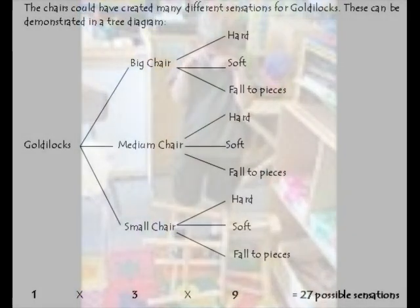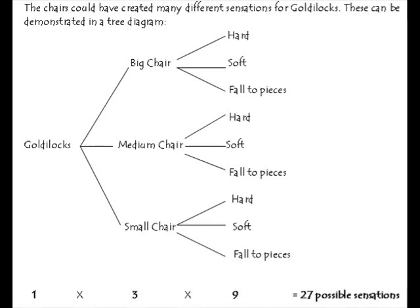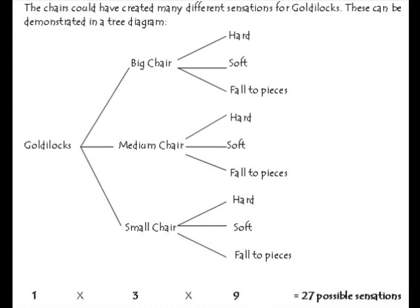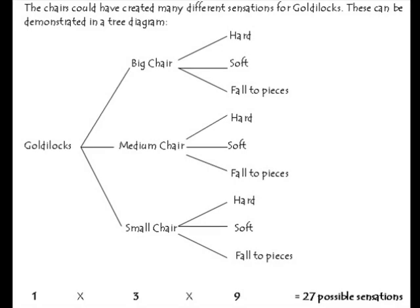The chair could have created many different sensations for Goldilocks. These can be demonstrated in a tree diagram. So, we have Goldilocks, then we have the three options of chair size, and then we also have the three options of the sensation that occurred, which could also correspond to different chairs. All in all, you have 1 times the three sizes of chairs times the nine possible sensations, which equals 27 possible sensations.